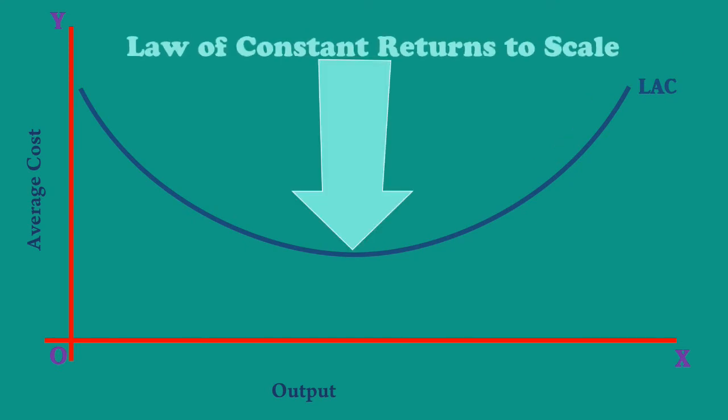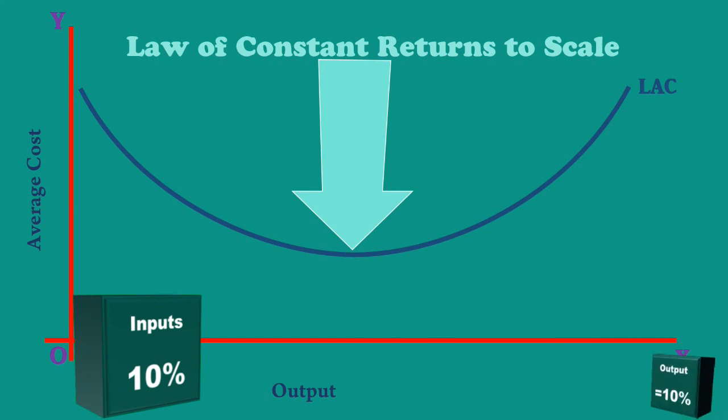In between the two, that is at the minimum point of the Long Run Average Cost Curve, Law of Constant Returns to Scale operates. It means a given proportionate increase in all the inputs will increase the output in the same proportion. For instance, a 10% increase in inputs will increase the output by 10%.